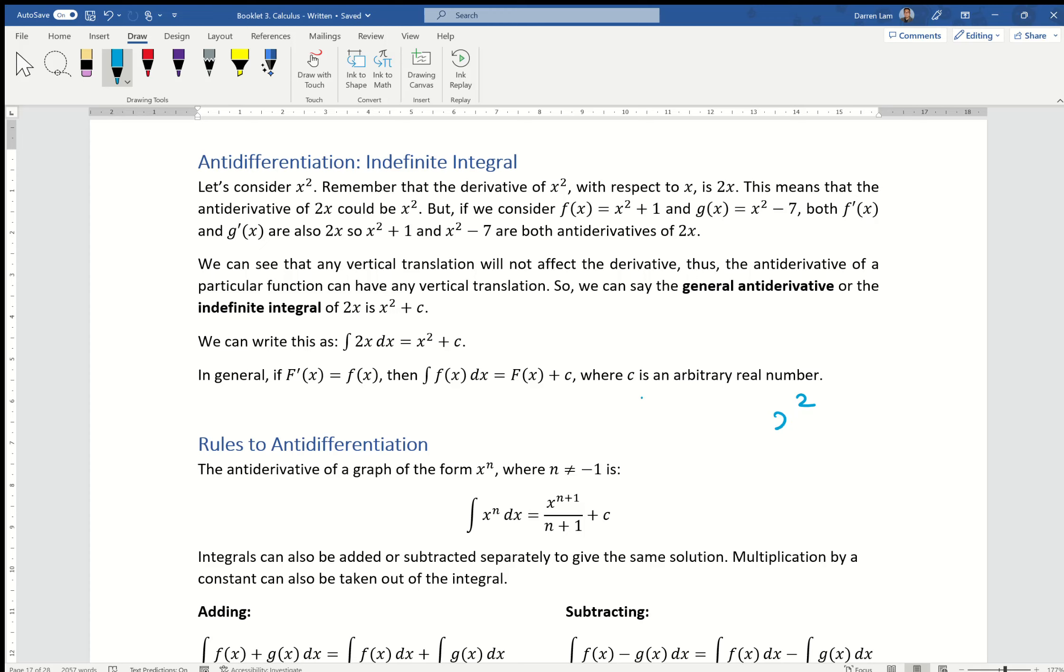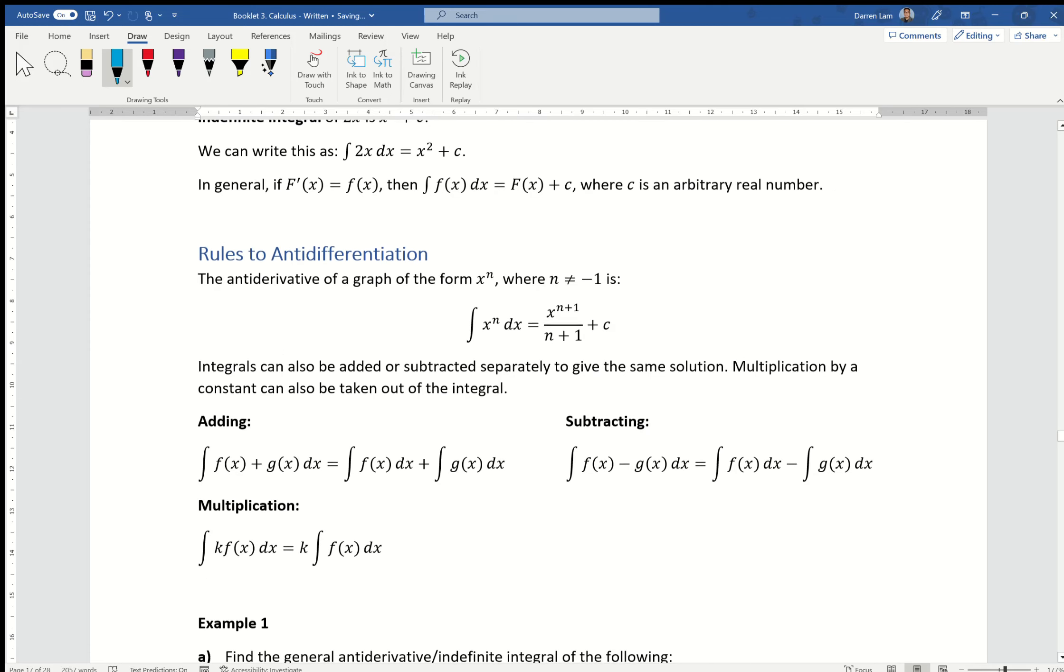But if I give you something like 2x and I tell you to antidifferentiate it back into the original equation, well, you might end up with x squared. You might end up with x squared plus 1, x squared plus 2, or whatever it is. And no matter what, it's impossible for us to get an exact answer unless we know more information. So we'll get into that a little bit later. But today, we're focusing on the idea of the indefinite integral.